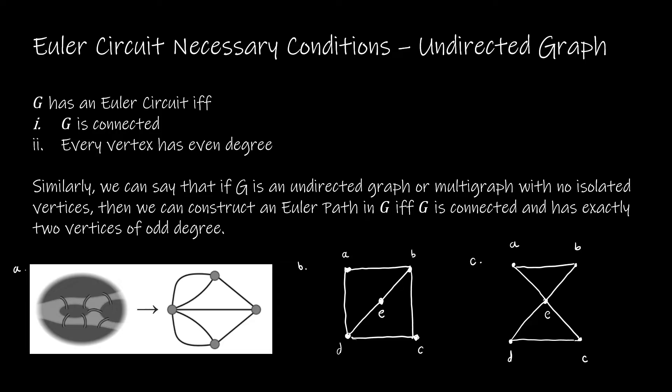I'm going to cut to the chase. In order for us to have an Euler circuit, we must have a connected graph. And additionally, every vertex must have an even degree. So let's think about why this makes sense. We're talking about an undirected graph and saying every vertex must have an even degree.